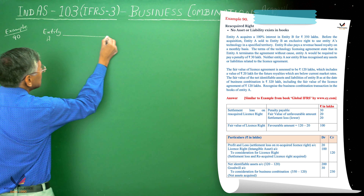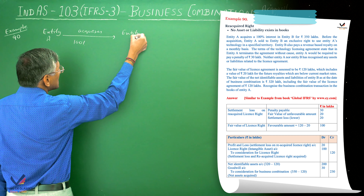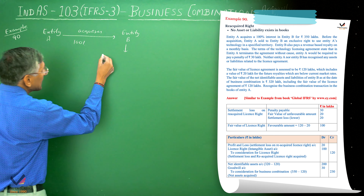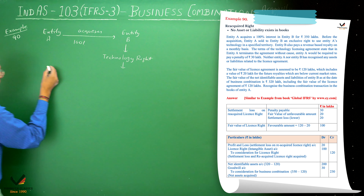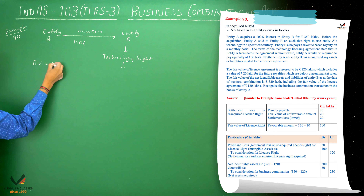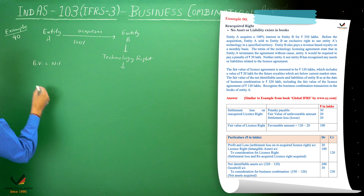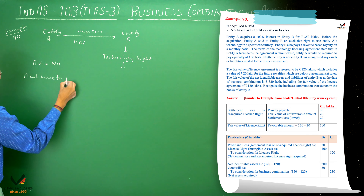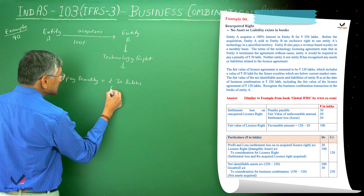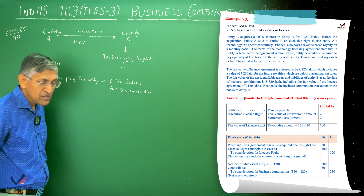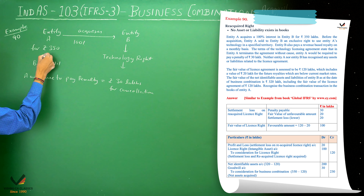So entity A has acquired 100% of entity B. Entity A had transferred its technology rights to entity B. If this agreement is cancelled, A will have to pay a penalty of rupees 30 lakhs. A has now acquired B for rupees 350 lakhs — this is your consideration.